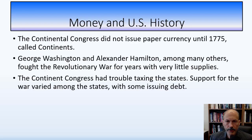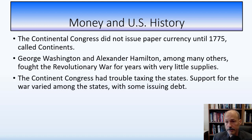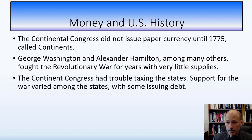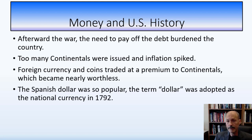The Continental Congress did not issue paper currency until 1775 — called Continentals. George Washington, Alexander Hamilton, and others fought the Revolutionary War for years with very little supplies, so they needed money to buy them. The Continental Congress ended up printing millions of dollars worth of Continentals, and the paper became worthless. Many local farmers would not accept it. So the Continental Army was undersupplied, while the British — who had gold and silver coins — bought plenty of supplies from local farmers.